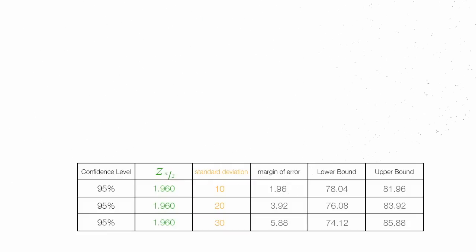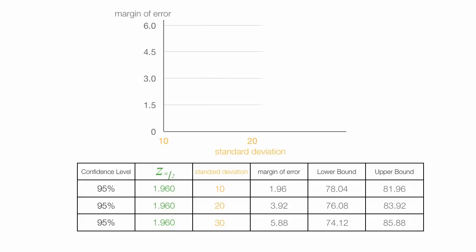Now let me get rid of all this and graph it. When I plot the margin of error along the y-axis and the standard deviation along the x-axis, I can easily see that as standard deviation increases, so does the margin of error. Starting with a standard deviation of 10 and increasing it to 30, I see the margin of error go from 1.96 to 5.88.